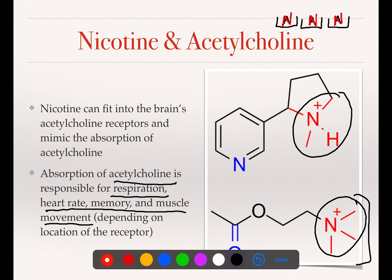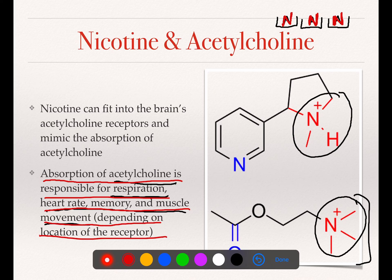However, nicotine actually stimulates the acetylcholine receptors — that is different from what caffeine does. When caffeine fits into the adenosine receptor, it just sits there and doesn't do anything; it doesn't trigger anything to happen, it just prevents something else from happening. When nicotine sits in an acetylcholine receptor, our body perceives it and responds just as if it were acetylcholine. So nicotine is being absorbed and is contributing to respiration, heart rate, memory, muscle movement — all these things. It's doing the job of acetylcholine.